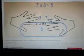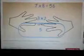The fingers that are above the touching fingers are 3 on the left hand and 2 on the right hand. We multiply these, 3 times 2 is 6, and that gets us our answer of 56.